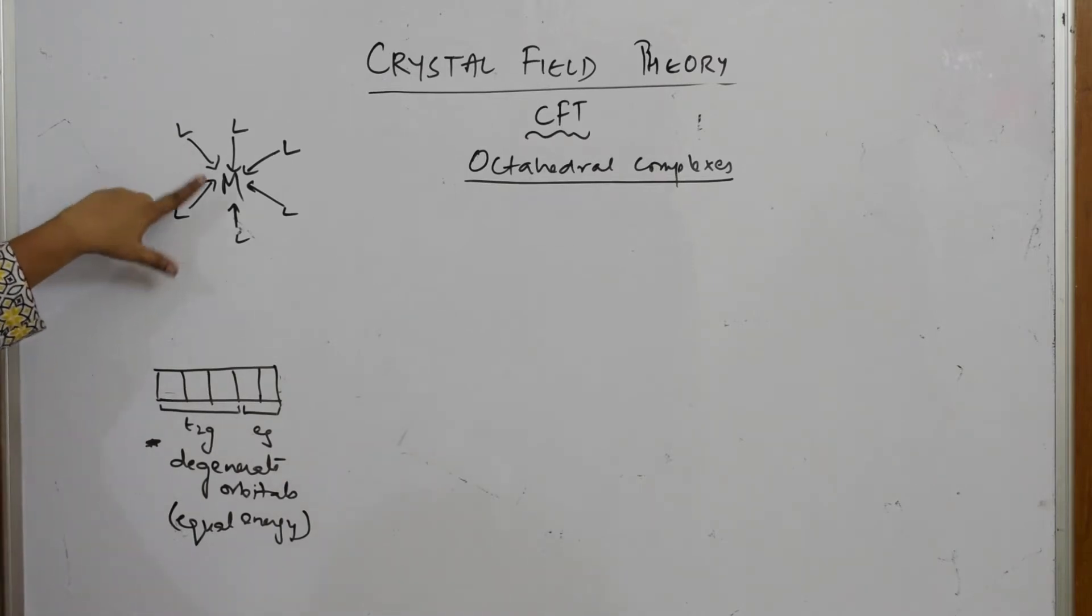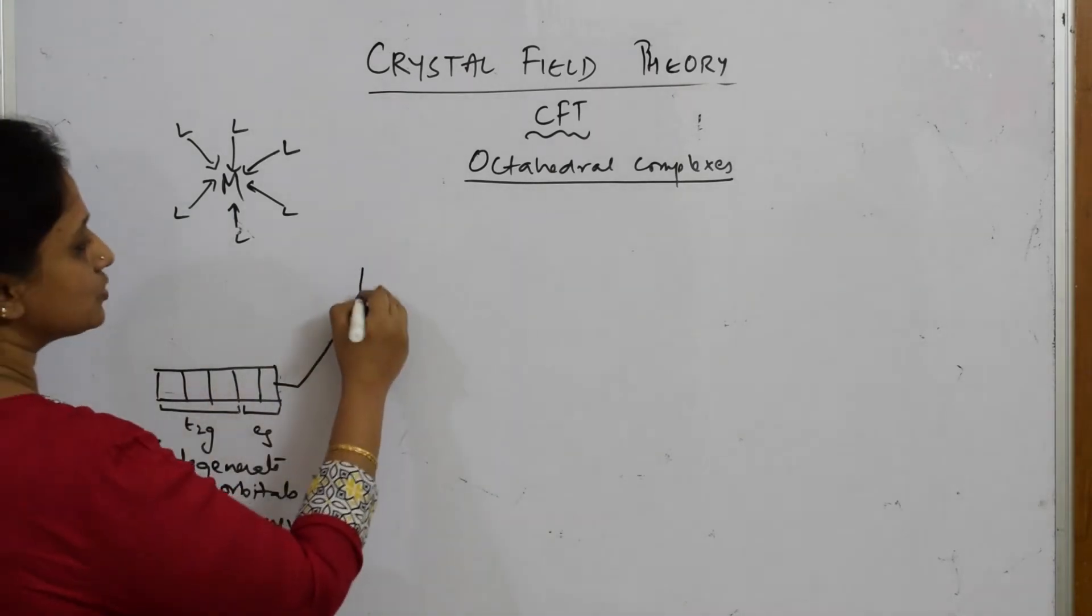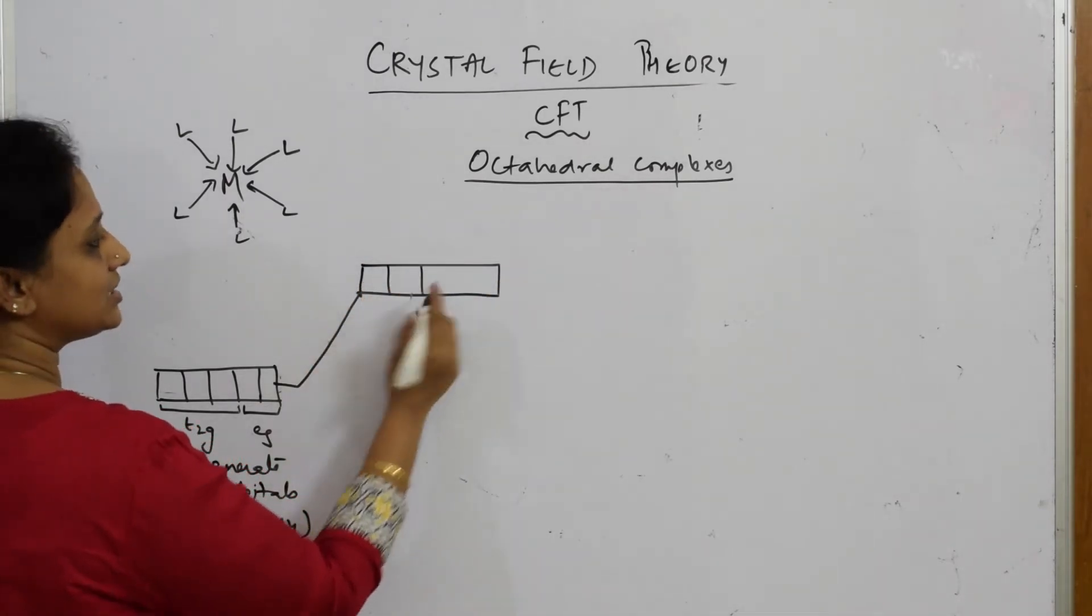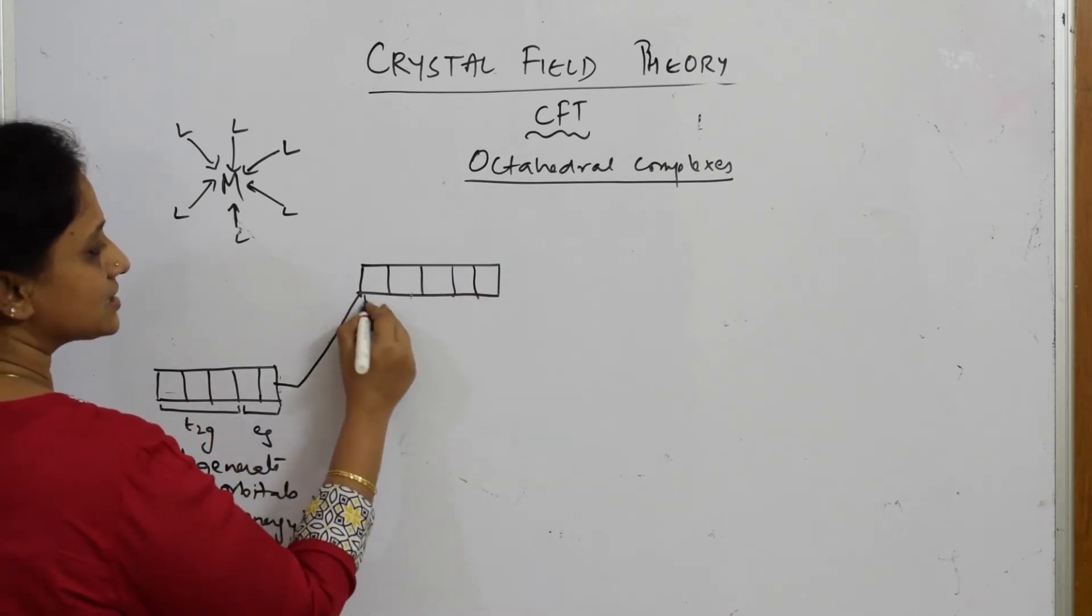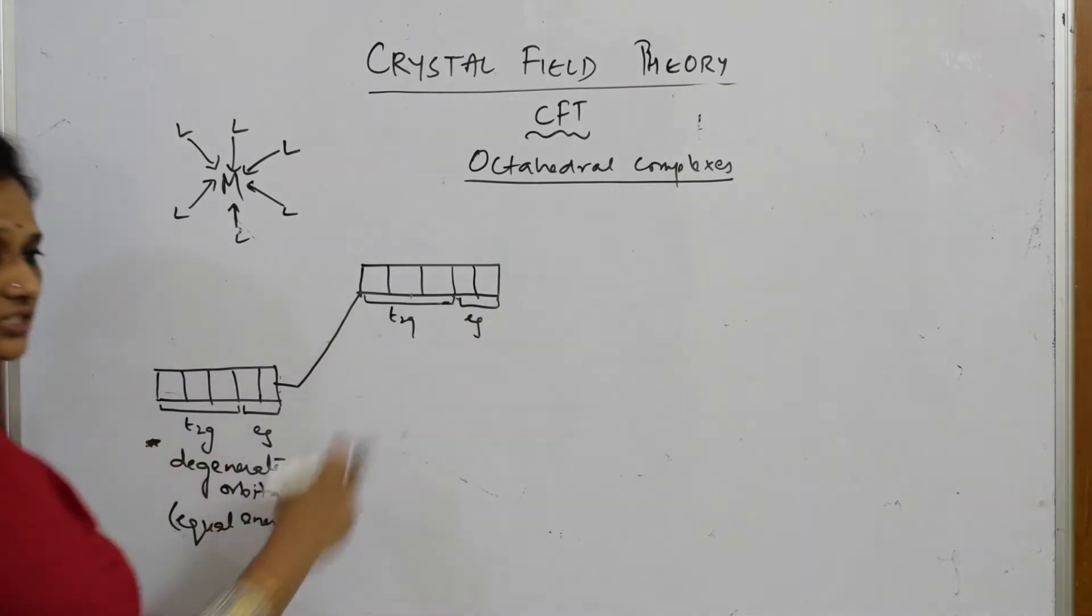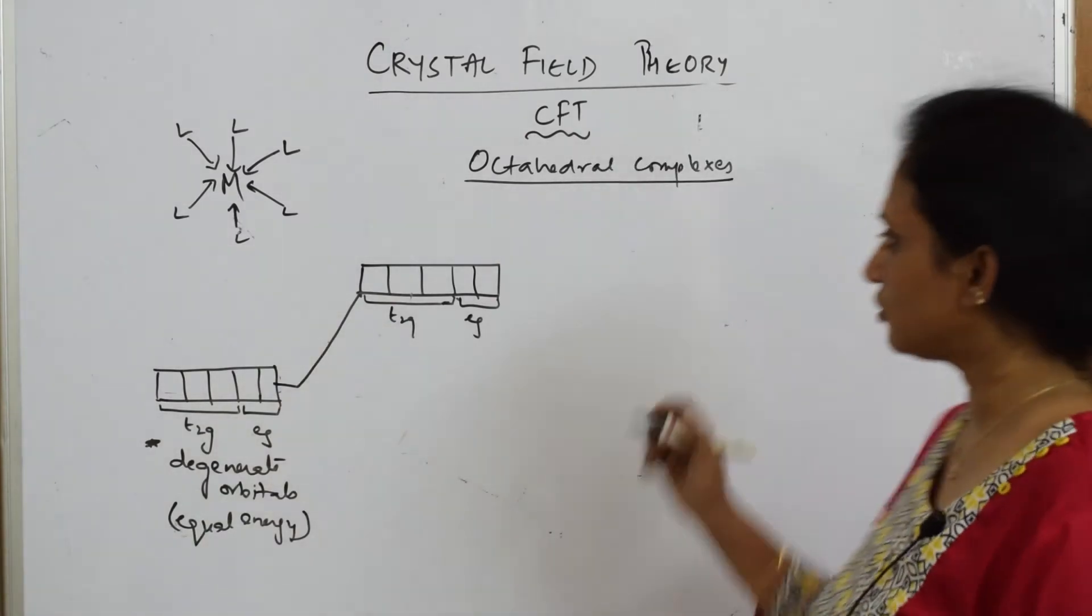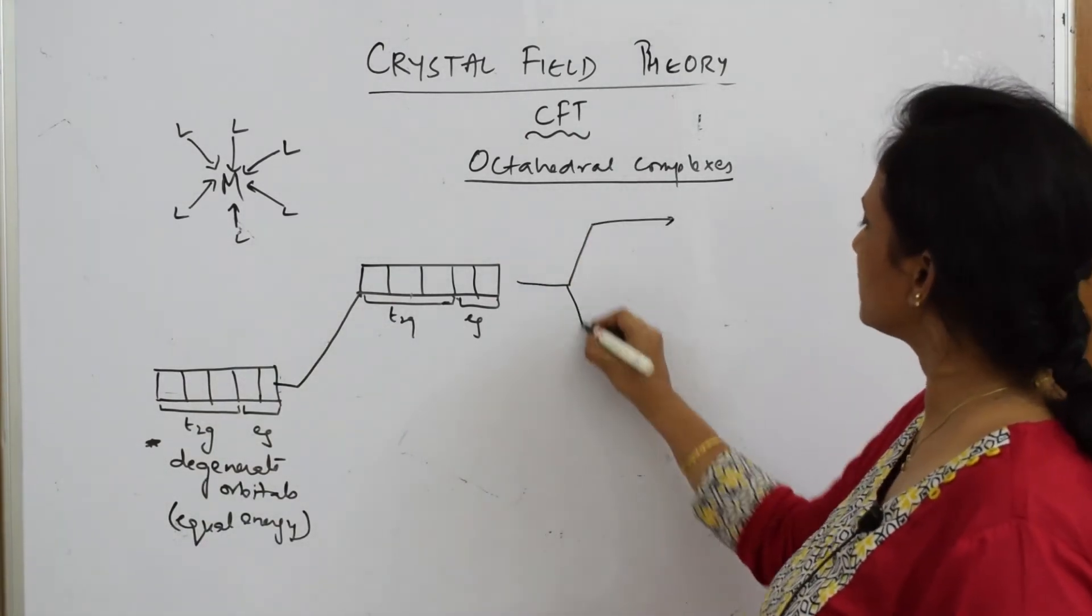Now what happens? The ligand starts approaching this metal. When the ligand starts approaching, the degeneracy is lifted up and this goes to a higher state. Again it is intact, still degenerate. One, two, three, four, five. Again this is t2g set and this is eg set - triplet degenerate and doublet degenerate set.